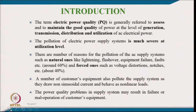Natural causes account for around 60 percent, and forced causes such as voltage distortion and notches account for about 40 percent. A number of customer equipment also pollute the supply system, such as drawing non-sinusoidal currents and behaving as non-linear loads. Power quality problems may result in failure or mal-operation of customer equipment.